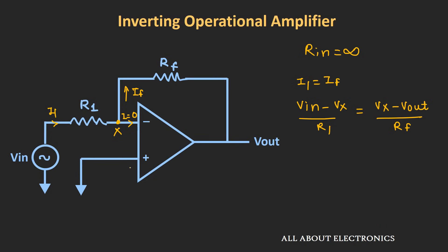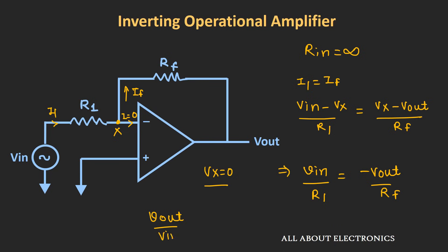Applying the virtual ground concept, node X should have zero potential because the non-inverting terminal is grounded, so Vx equals 0. This simplifies the expression to: Vin divided by R1 equals minus Vout divided by RF. Rearranging, we get Vout divided by Vin equals minus RF divided by R1. This expression is the closed-loop gain for the inverting op-amp configuration. By changing the values of RF and R1, we can control the gain of the op-amp. The negative sign indicates the output voltage is 180 degrees out of phase with respect to the input voltage.